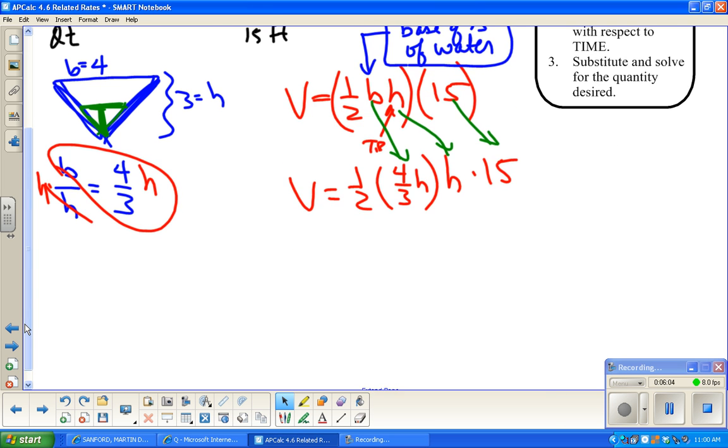All right. So, clean up crew. V equals, well, I know that I can divide out a two here, and I can divide out a three here. So this is just 10H squared.